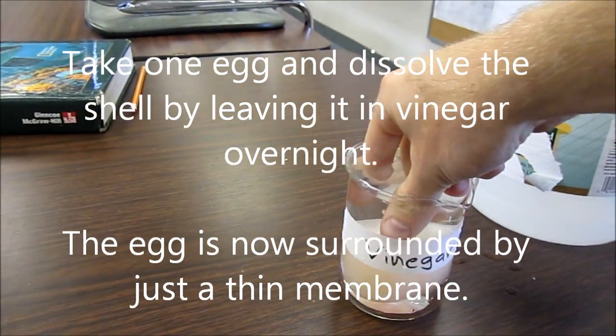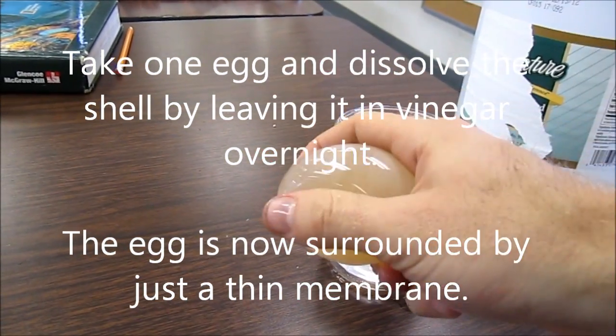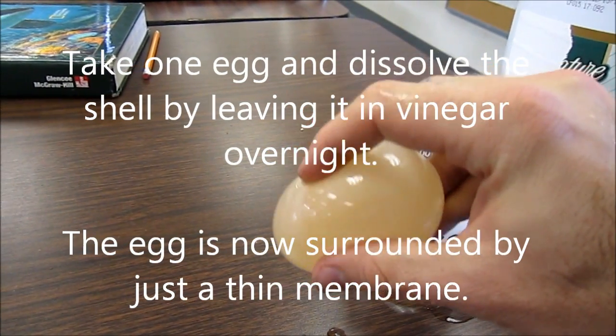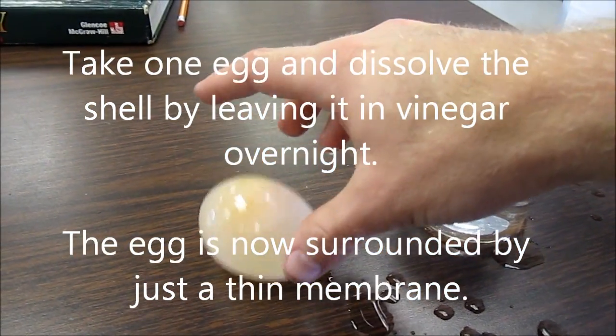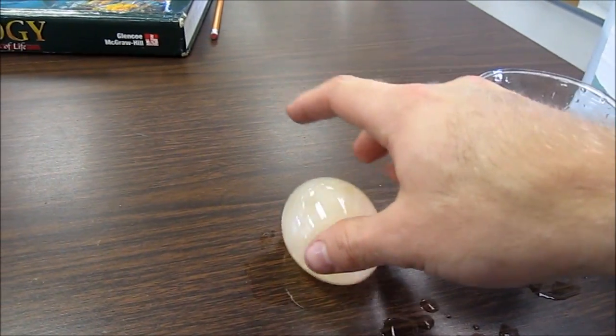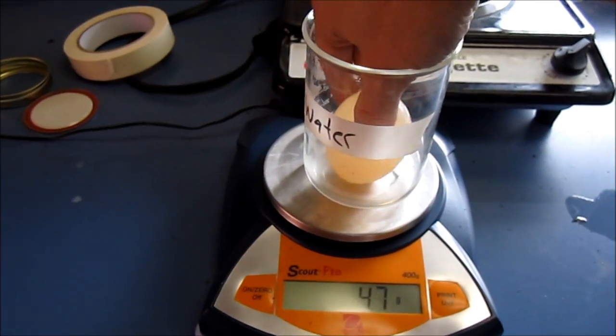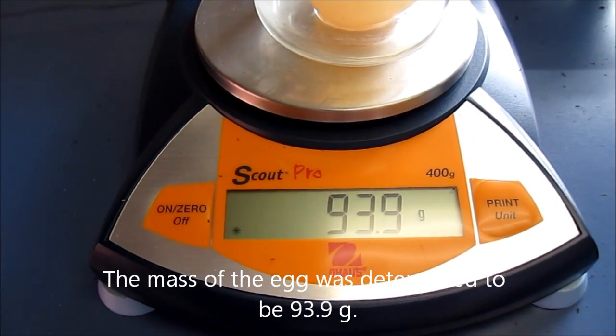Now the setup for this experiment is we start with an egg that has had its shell dissolved by soaking it in vinegar overnight. The vinegar dissolves the calcium carbonate, the shell around the egg, so it's left with just a membrane. We take this egg with just the thin membrane covering it and we're going to start by calculating its mass. We stick it on the scale here and we find it has a mass of about 93.9 grams.